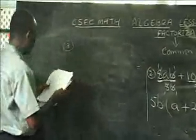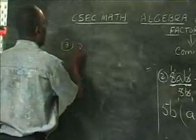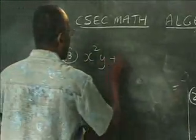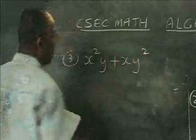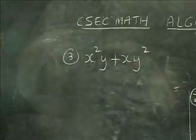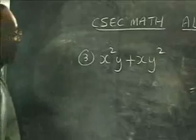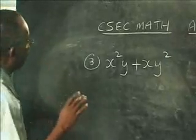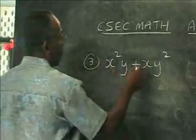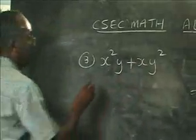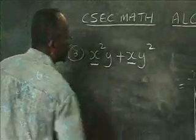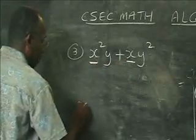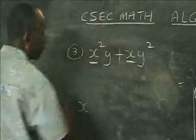Let's look at the next example: x squared y plus xy squared. We check what is common. There are no number coefficients other than 1. Looking at the letters: x squared and x — I can take out x from both. Then y and y squared — I can also take out y from both. So the common factor is xy.